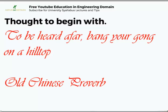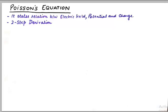Now let's talk about the significance of Poisson's equation. It states relation between electric field potential and charge. This is just a mathematical expression of electric potential with respect to charge. And it is very simple to derive, it has a two step derivation that we are going to do.